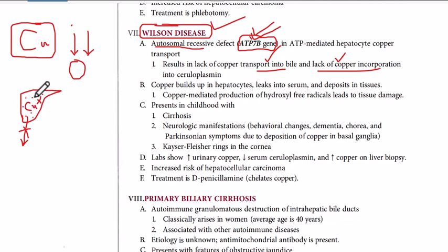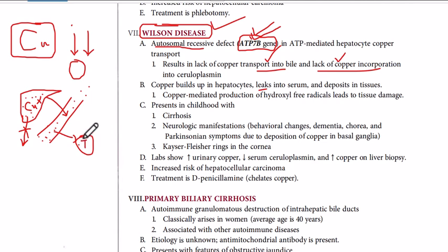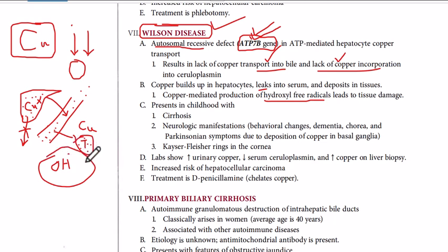When copper accumulates in the liver, it finally leaks into the serum. When we have excess copper in the blood, it then leaks into the different tissues and we have deposition of copper in different parts of the body. This excess copper results in the generation of hydroxyl free radicals. Free radicals cause oxidation, and oxidation destroys the cell membrane and the tissues — so wherever copper is deposited, it will result in damage to that part of the body.